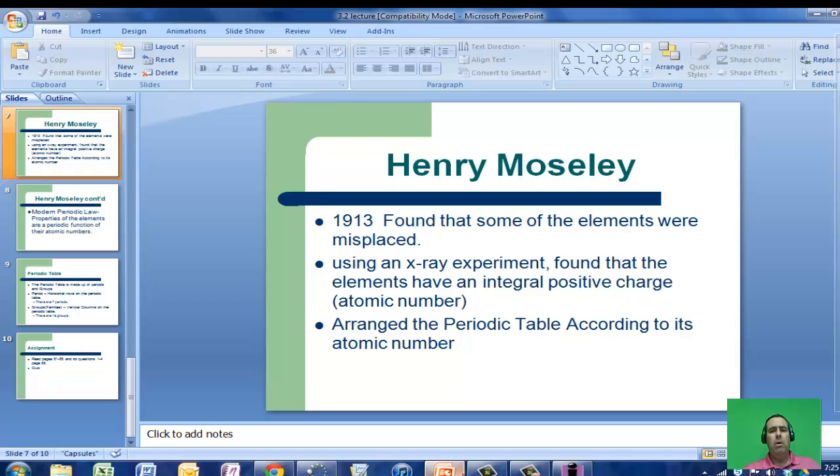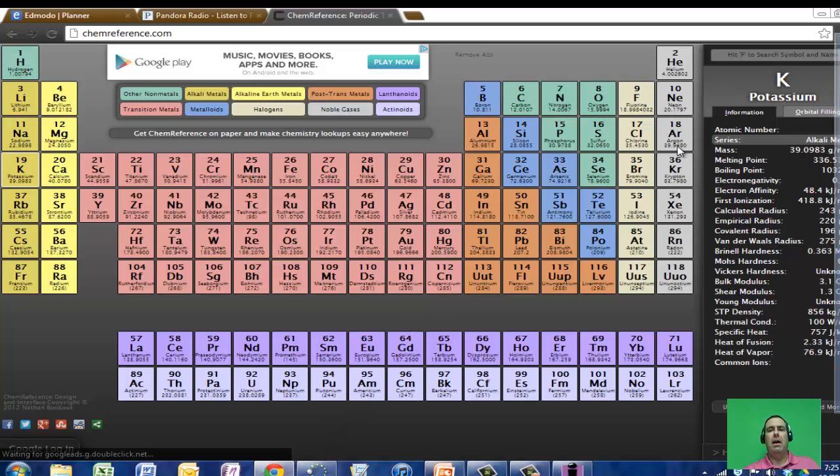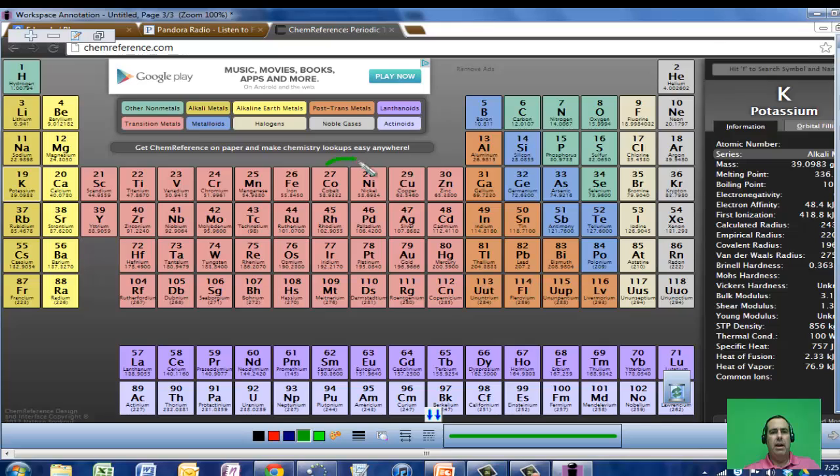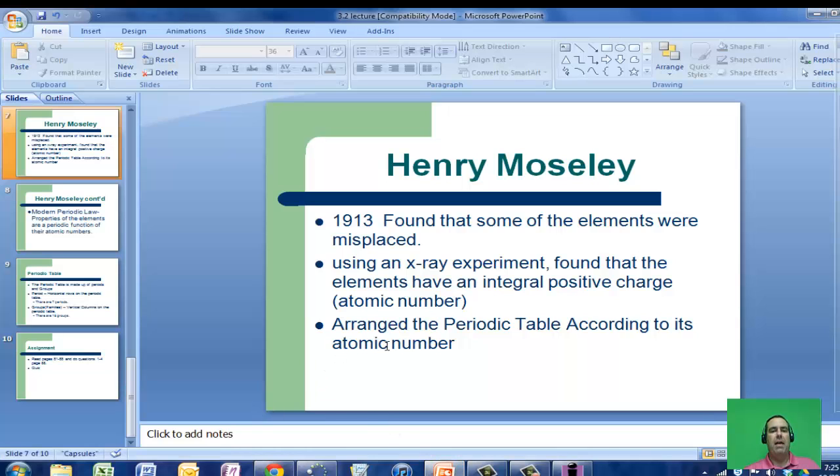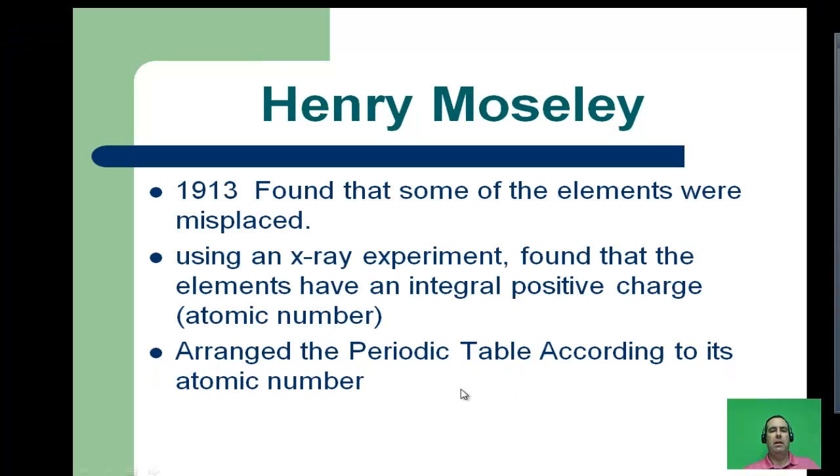That integral positive charge is the atomic number. So he organized his periodic table by increasing atomic number. When we look at Mendeleev's periodic table, for example, he would have had argon here and potassium where argon was. Another one was cobalt and nickel—he would have had those two switched around. These two would have been switched, and these two would have been switched on Mendeleev's periodic table when we go by increasing atomic mass. So he organized his periodic table by increasing atomic number.